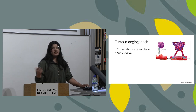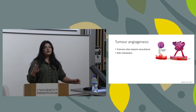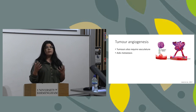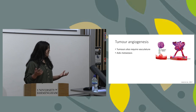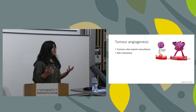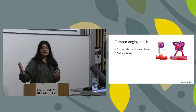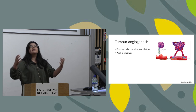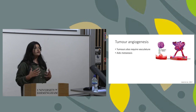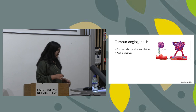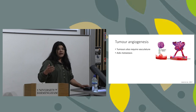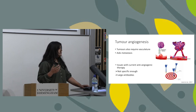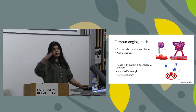Cancer cells are no different — they also need their own blood supply to grow beyond two millimeters cubed. So they are also able to give off these angiogenic factors and activate endothelial cells to supply themselves with nutrients from our body. This is important not only in providing the tumor with nutrients but also in aiding metastatic spread.